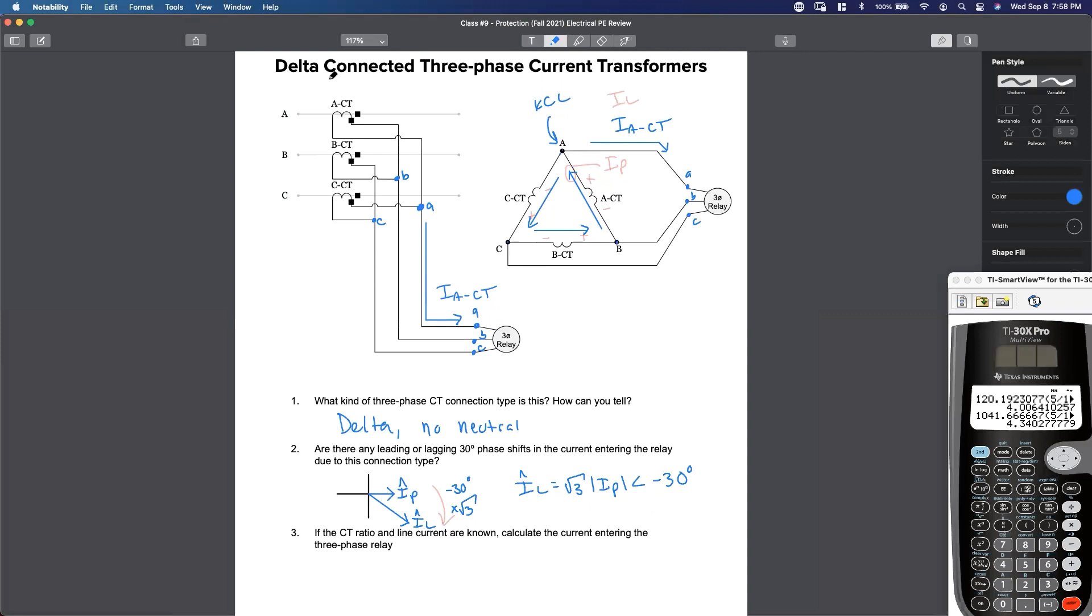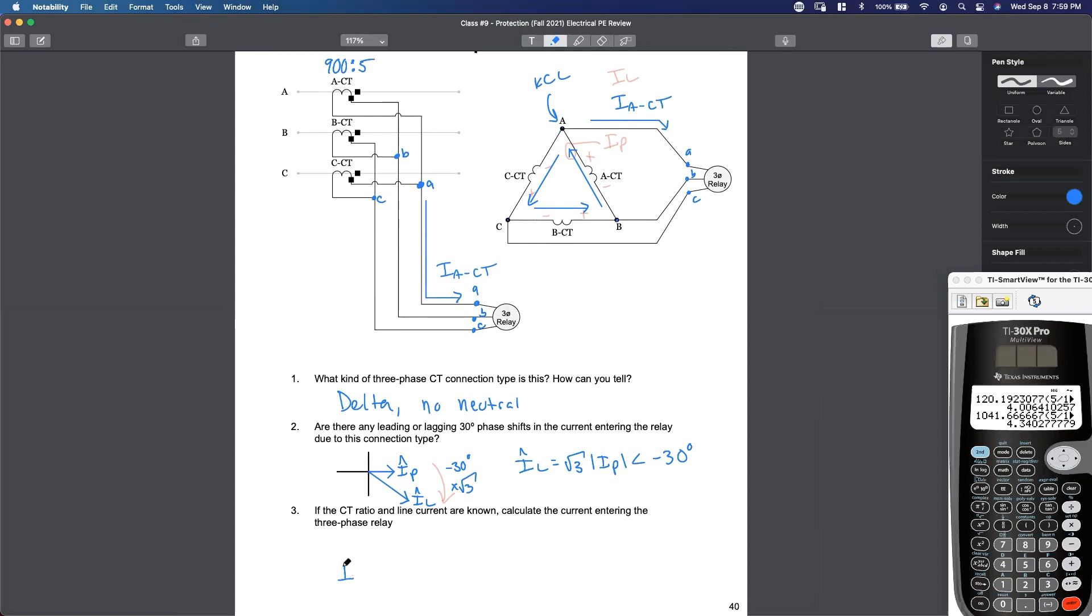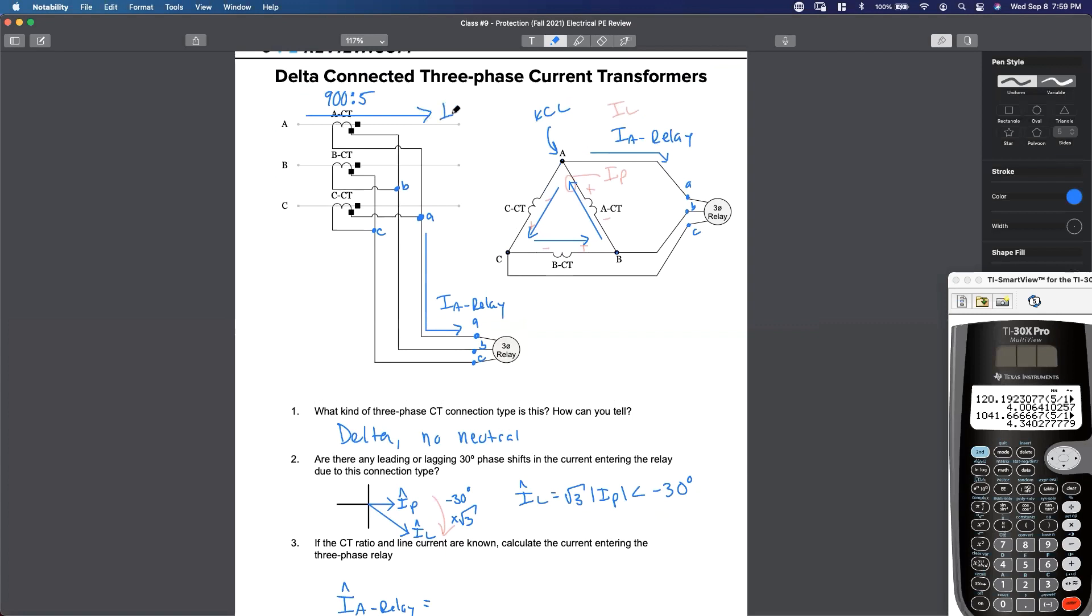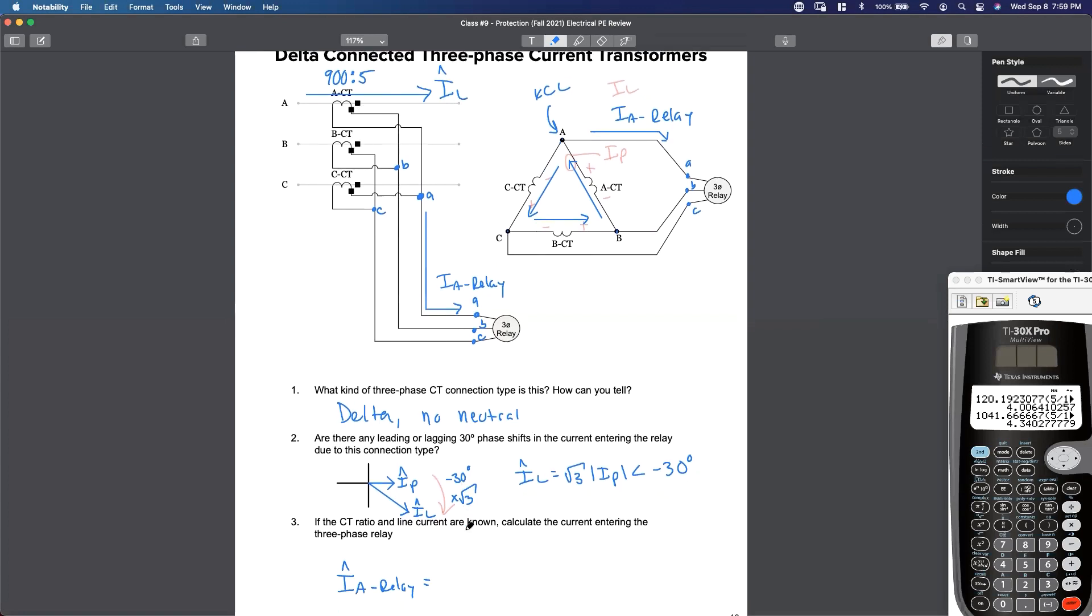Does that make sense? So let's assume what we did last time, 900 to 5. Assume that's our CT ratio. The CT ratio is known, and the line current is known. We'll just use magnitude I line. How do I calculate the actual current entering the A phase of the relay? What is complex IACT? Or in this case, really, actually, let's call this relay, IA relay, to differentiate between the current circling in the CT. How about that? What is IA relay?